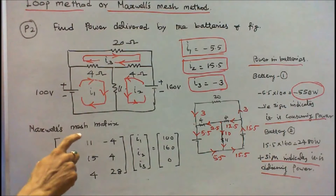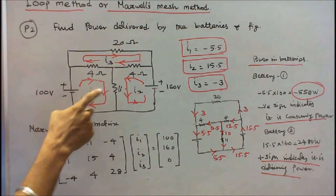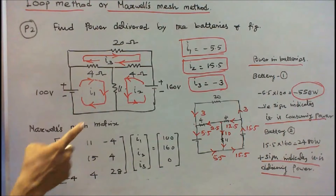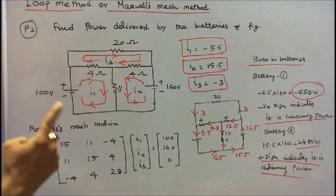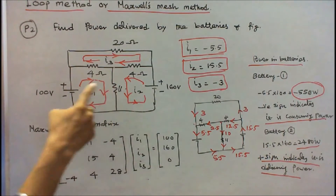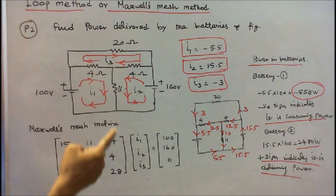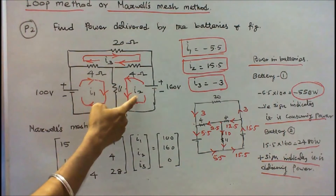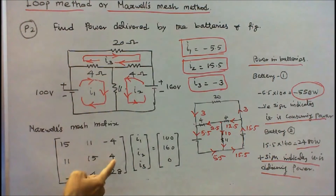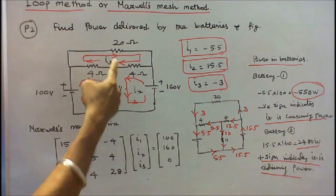Now I form a Maxwell mesh matrix. The diagonal elements: first loop resistance is 11 plus 4 = 15; second loop resistance is 11 plus 4 = 15; third loop resistance is 4 plus 4 plus 20 = 28. The resistor common to loops 1 and 2 is 11 ohm, and since direction is the same, the element is plus 11. The resistor common to loops 1 and 3 is 4 ohm, direction opposite, so minus 4. Common to loops 2 and 3 is 4 ohm, direction same, so plus 4. V1 = 100, V2 = 160, V3 = 0.